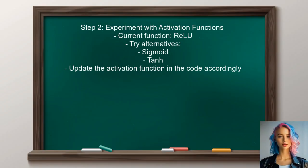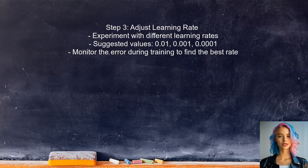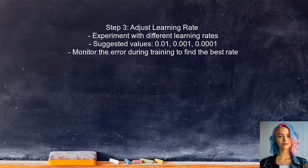Next, the user should experiment with different activation functions. Since the current implementation uses the ReLU activation function, trying alternatives like Sigmoid or Tanh might help the network learn better from the data. The user should also consider adjusting the learning rate. A learning rate that is too high can cause the network to overshoot the optimal weights, while a rate that is too low can lead to slow convergence. Testing different values can help find a suitable rate.